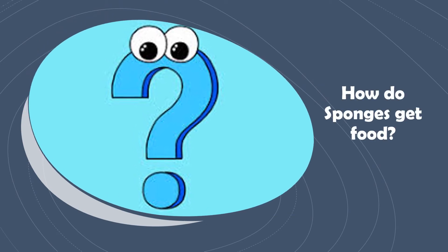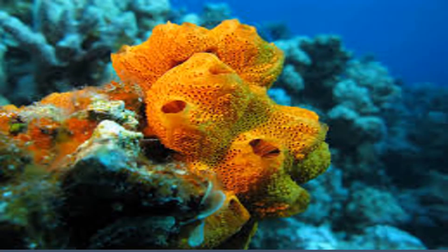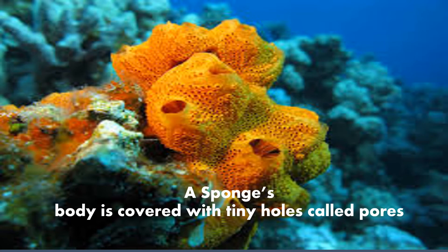So here's a question for you. If sponges do not move from place to place, how do they get food? Well, sponges are filter feeders. Let's look closely at this sponge — do you notice the tiny holes? Tiny holes covering a sponge's body are called pores.